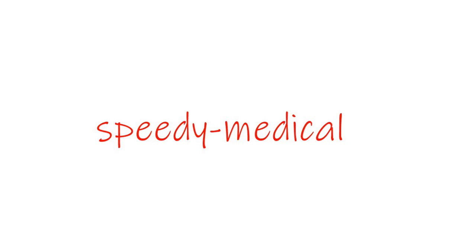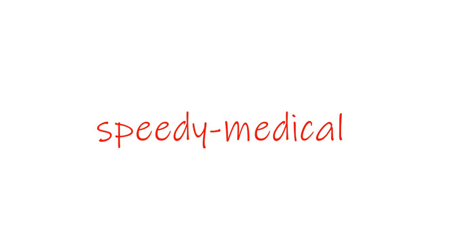Before we dive into the actual pathophysiology of the disease, let's look at the normal physiology of copper excretion from the hepatocytes. Within the hepatocytes there is a transporter protein whose function is to incorporate copper into a protein called ceruloplasmin. As a result, the copper-ceruloplasmin complex is formed and thrown out of the hepatocytes into the biliary canaliculi, and the copper is excreted in the bile.